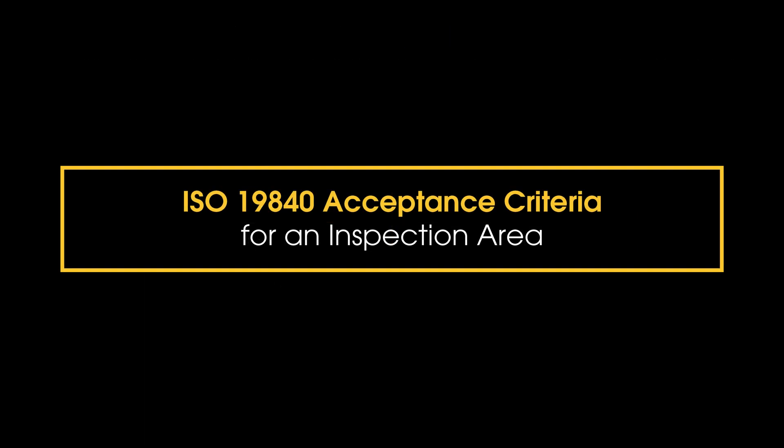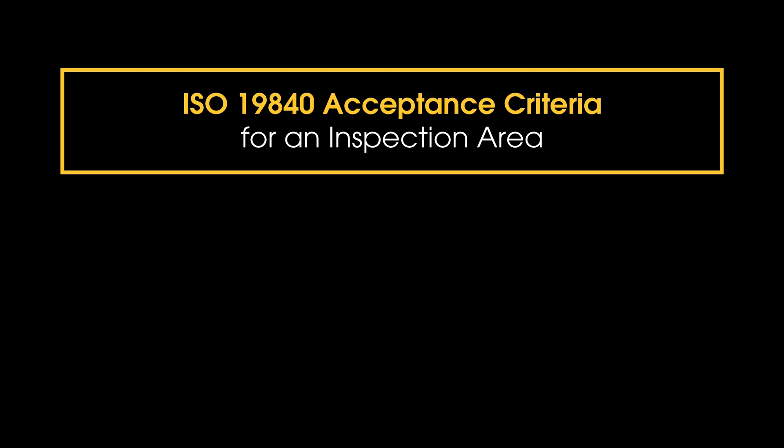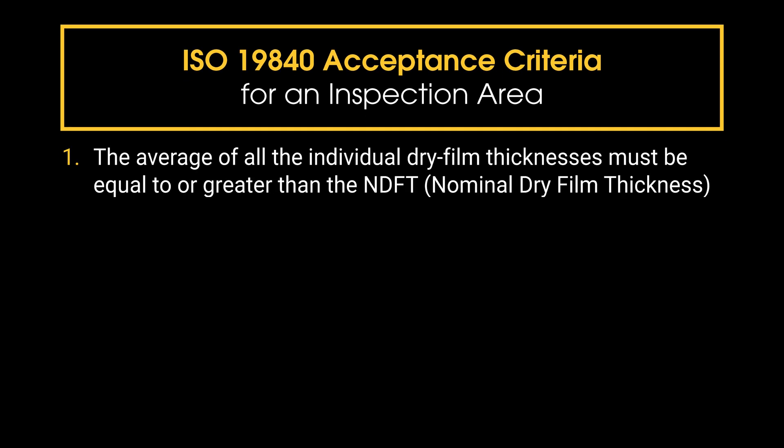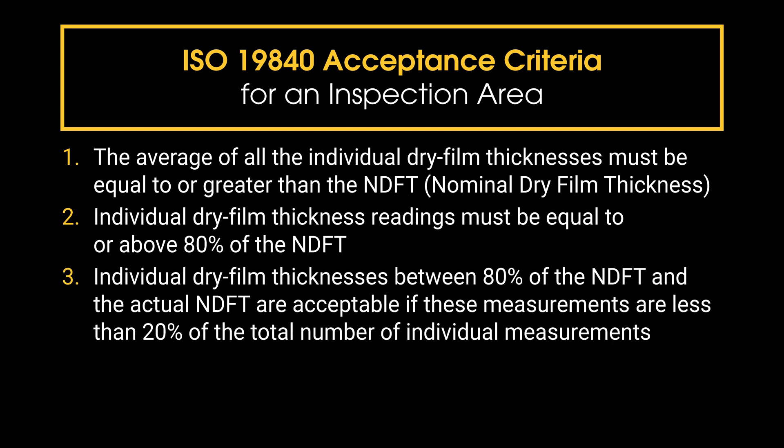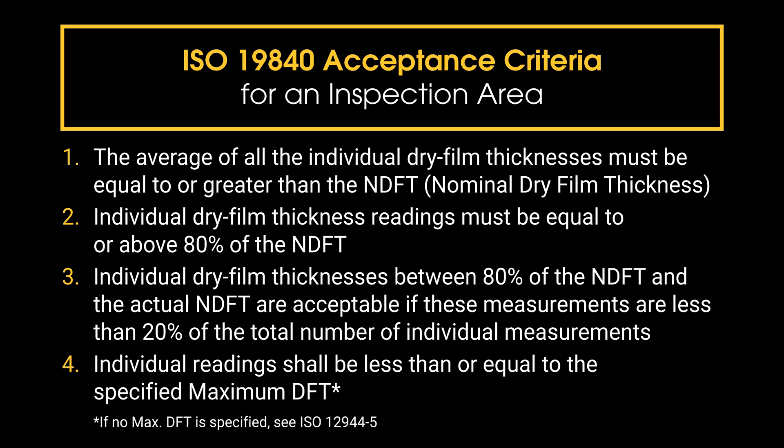There are four key requirements for acceptance of an inspection area. The average of all the individual dry film thicknesses must be equal to or greater than the NDFT. All individual dry film thickness readings must be equal to or above 80% of the NDFT. Individual dry film thicknesses between 80% of the NDFT and the actual NDFT are acceptable, provided that the number of these measurements is less than 20% of the total number of individual measurements taken. Additionally, individual readings shall be less than or equal to the specified maximum dry film thickness.